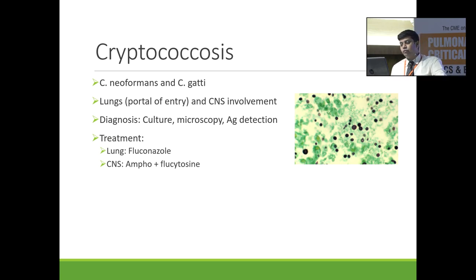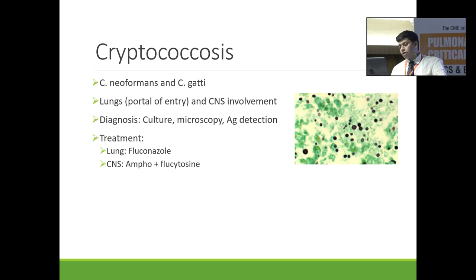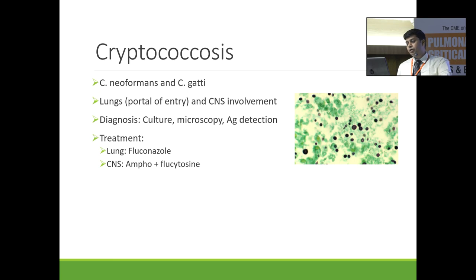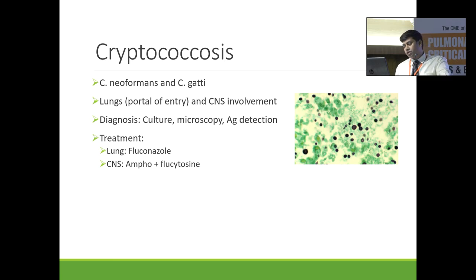Cryptococcus has two forms: neoformans and gattii. The lungs are the portal of entry and CNS involvement is characteristic — whenever a patient has lung involvement combined with CNS involvement, keep Cryptococcus in the differential diagnosis. A recent case was diagnosed with positive cryptococcal microscopy on CSF; the patient presented with pneumonia and altered sensorium with a brain lesion on MRI. Diagnosis is by culture, microscopy, or antigen detection. For lung-only disease, fluconazole is the therapy. If CNS is involved, AmphoB plus Flucytosine is used — one of the key indications for Flucytosine in fungal infections.